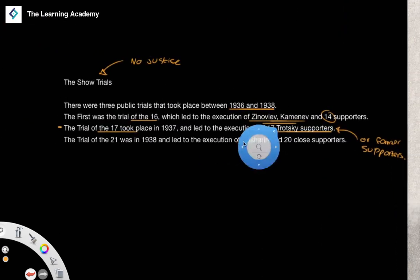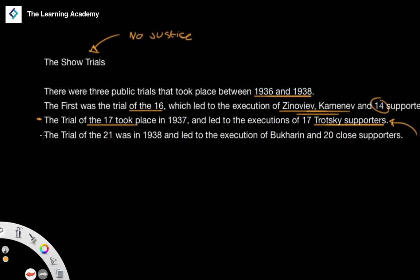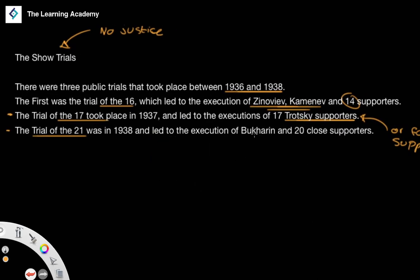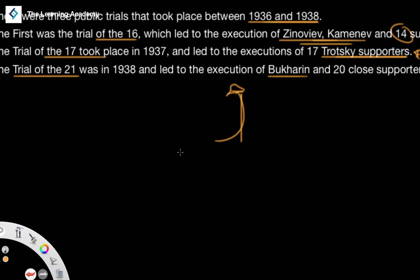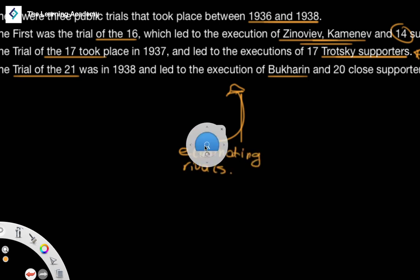The final show trial took place in 1938, and this was the Trial of the 21. It led to the execution of another quite high-ranking official within the Communist Party — Bukharin — and a number of close supporters. We have here what would be easily described as Stalin's elimination of rivals.